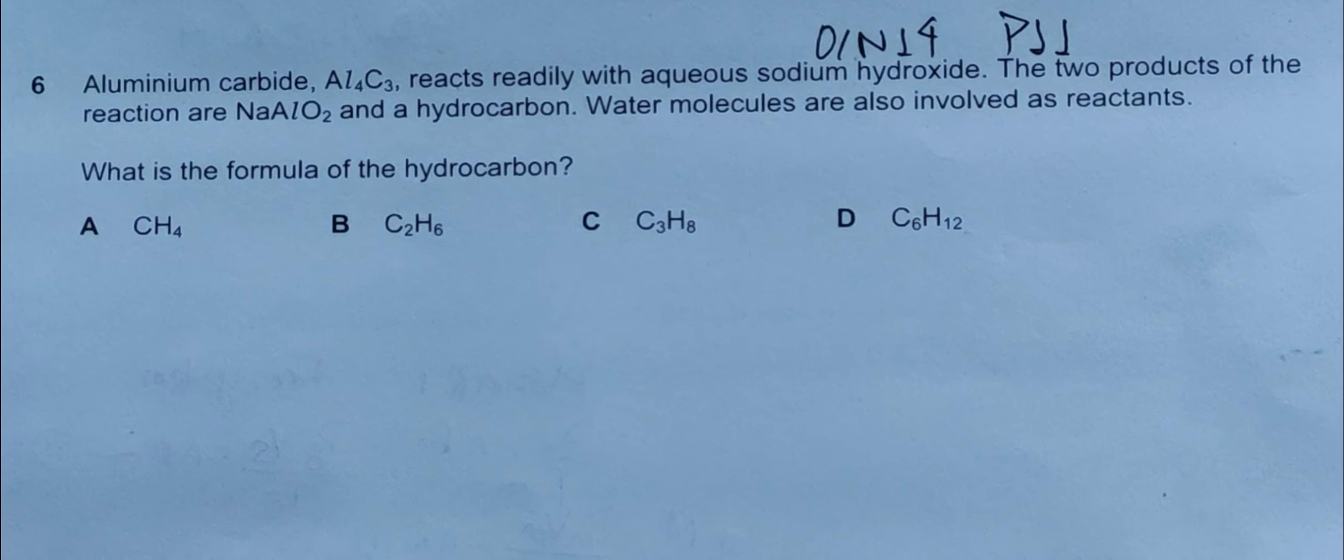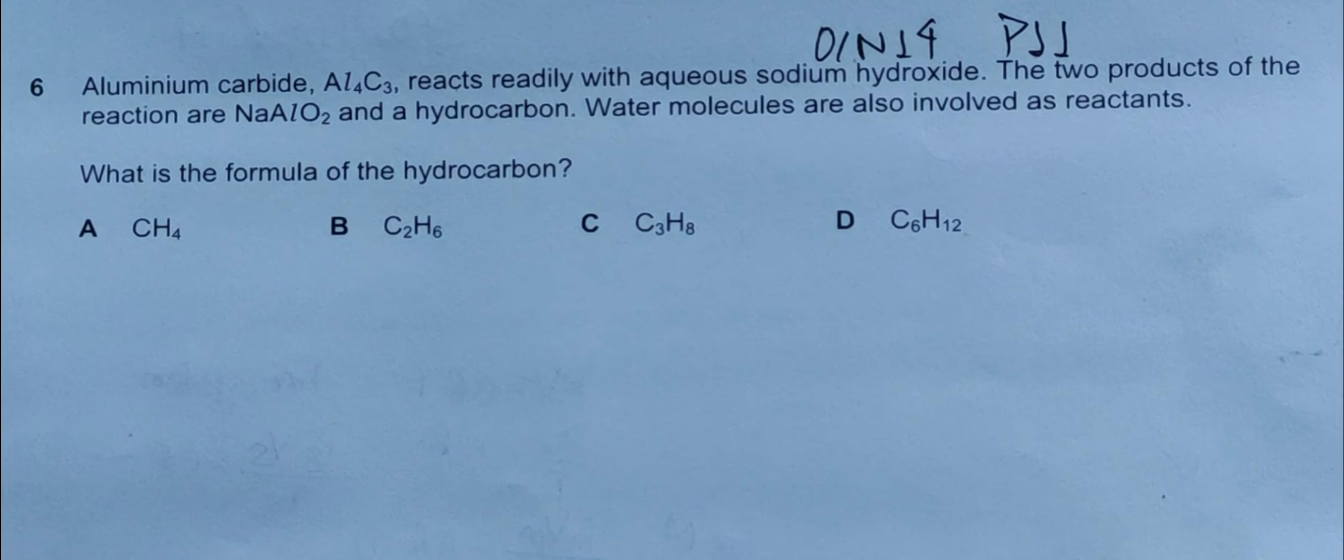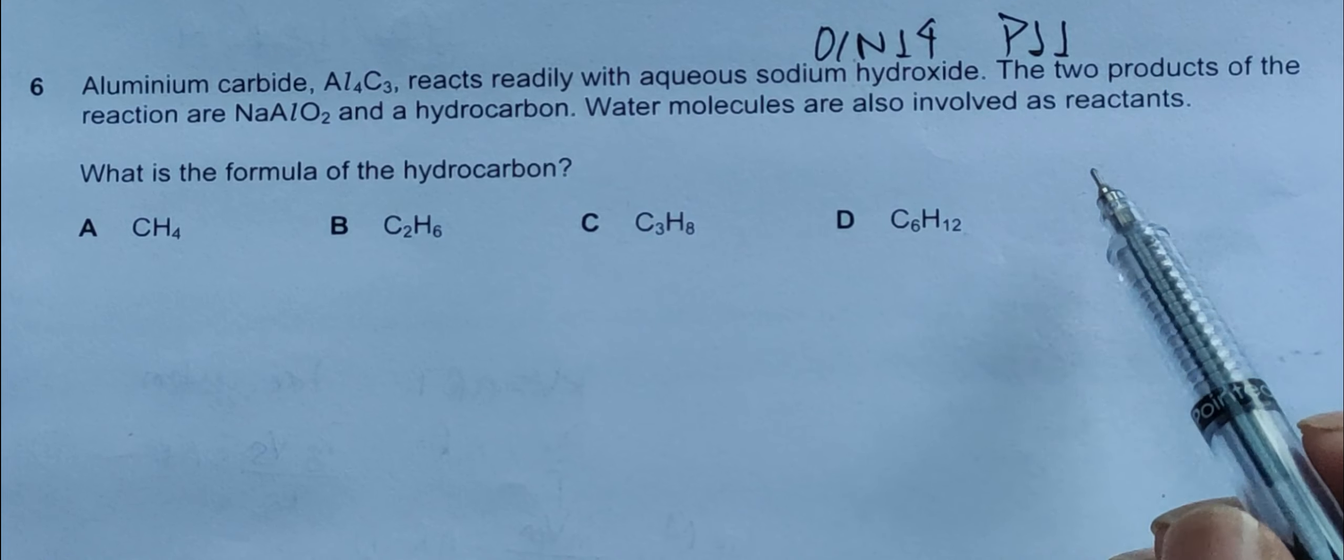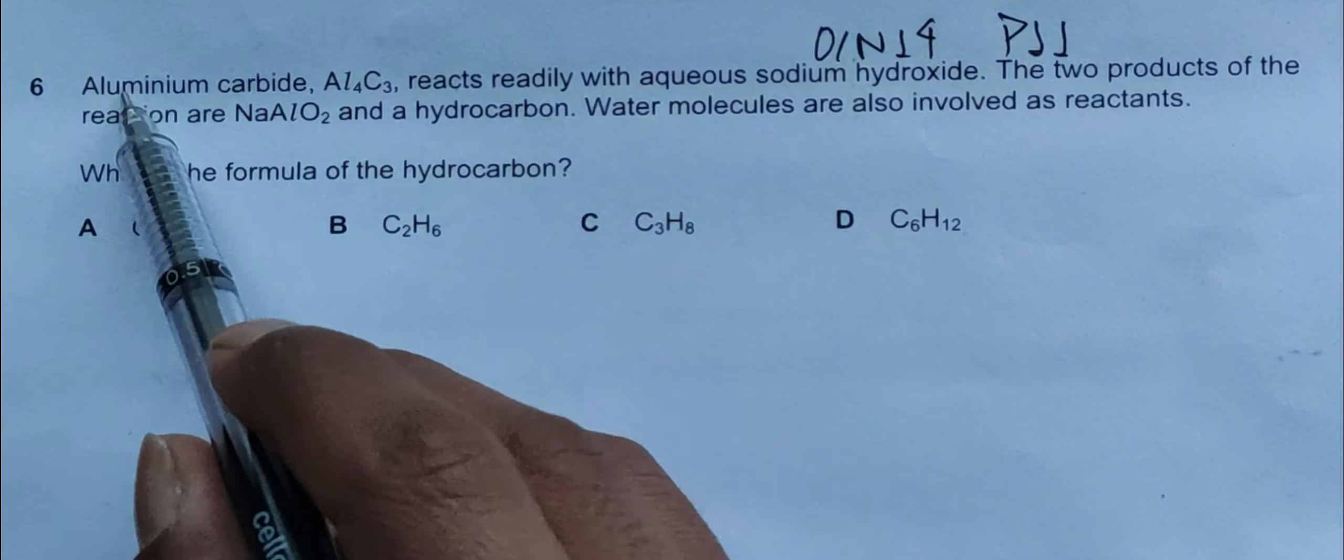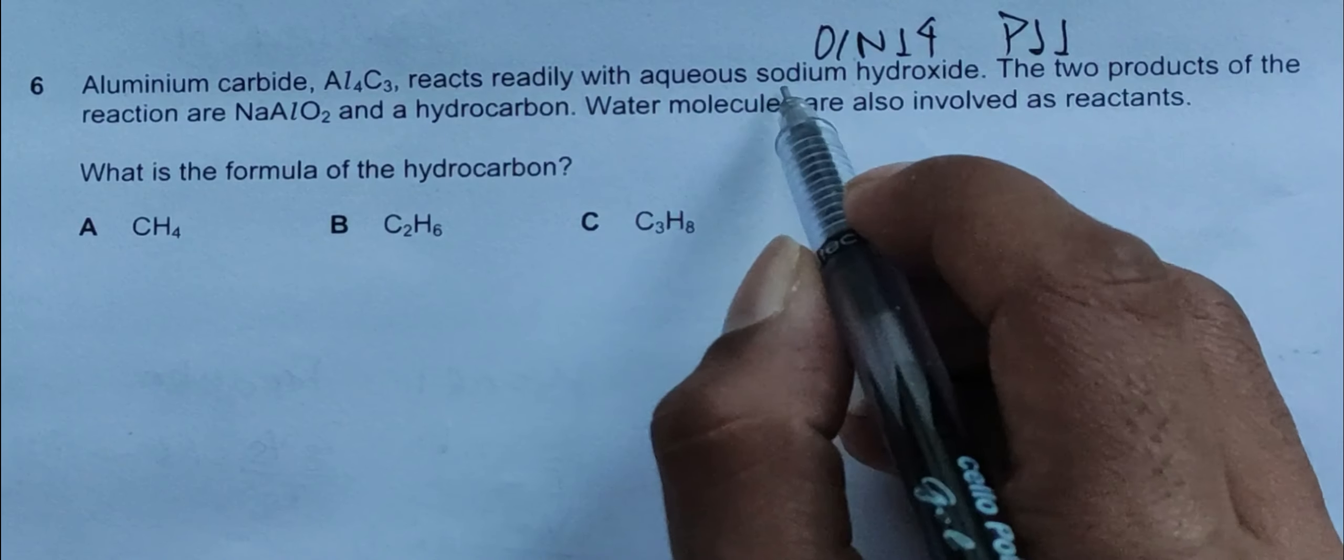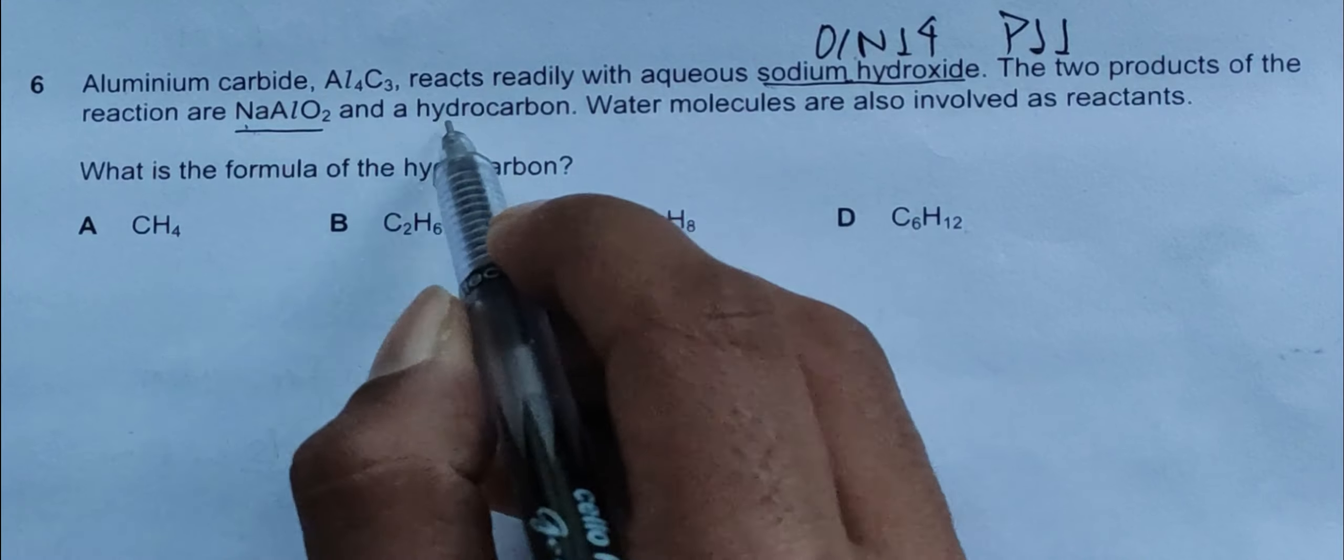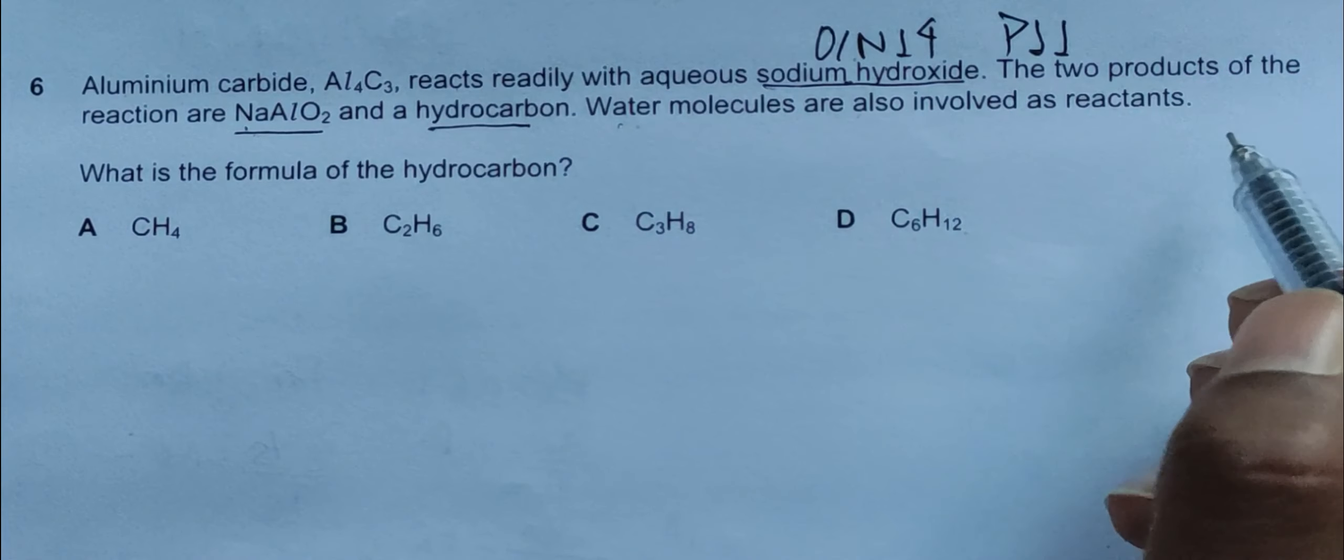Although the main objective of this question is only to construct a balanced equation, due to the nature of this question and the products formed, there can be some room for confusion. The question states aluminum carbide Al4C3 reacts readily with aqueous sodium hydroxide. The two products are NaAlO2 and a hydrocarbon. Water molecules are also involved as reactants.